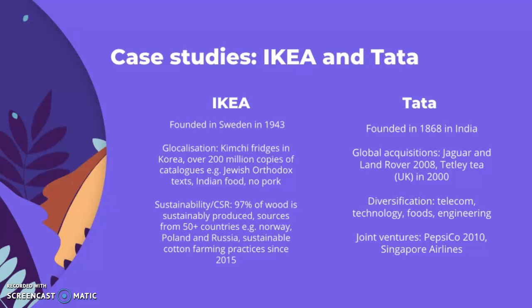IKEA's cultural adaptations include offerings of Jewish orthodox foods, different cuisines such as Indian food, and accommodations for certain religions such as no pork. They also have a global strategy for sustainability and corporate social responsibility: 97% of their wood is sustainably sourced from 50-plus countries such as Norway, Poland, and Russia. They have also had sustainable cotton farming practices since 2015, providing fair conditions for workers and farmers.